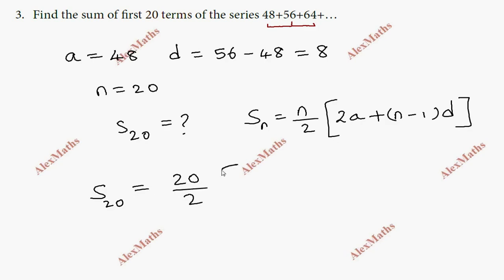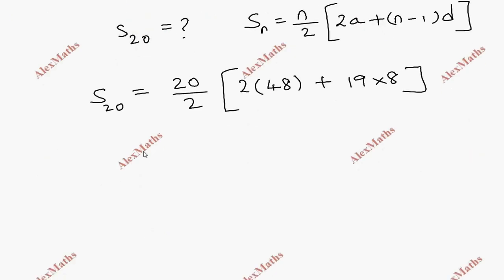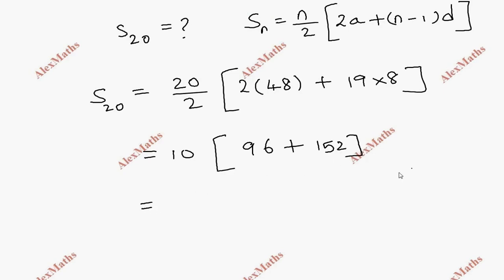Substituting: S_20 = 10 × (2×48 + 19×8) = 10 × (96 + 152) = 10 × 248 = 2480.